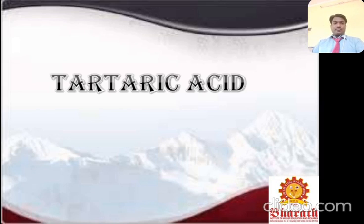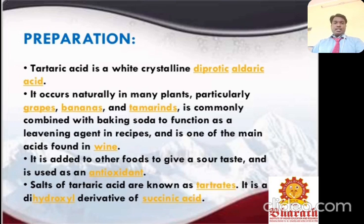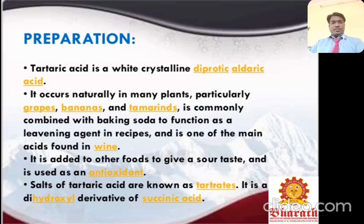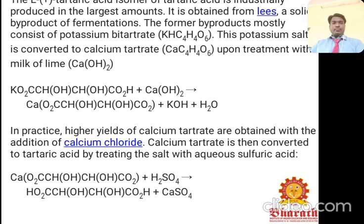Tartaric acid preparation: tartaric acid is a white crystalline diprotic aldaric acid that occurs naturally in many plants, particularly grapes, bananas, and tamarinds. It is commonly combined with baking soda to function as a leavening agent in recipes and is one of the main acids found in wine. The salt of tartaric acid is known as tartrate. It is a dihydroxyl derivative of succinic acid.